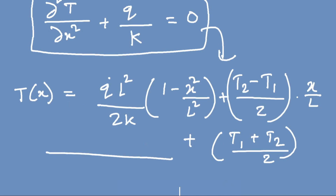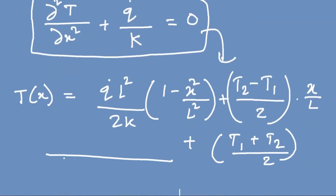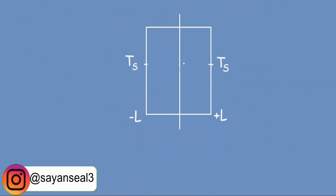In most cases encountered, T1 and T2 will be equal — that is, a single surface temperature is given and we are asked to calculate the temperature profile. I showed the general equation to give an idea of where it comes from. The important case is when surface temperatures are equal, denoted Ts, with heat generation q_dot in watts per meter cube.